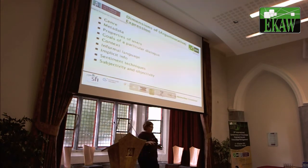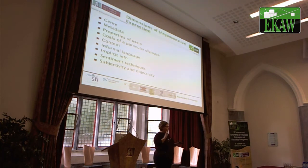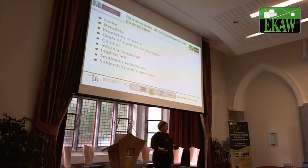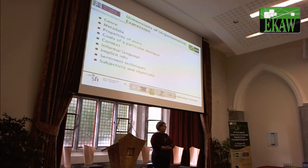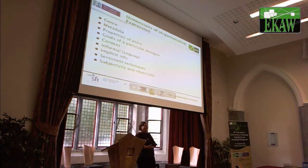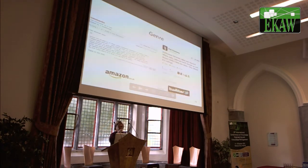The main point of this position paper is to give a list of what I'm calling dimensions of argumentative expression. If you're going to analyze argumentation in some automated or semi-automated way, the things you need to look at are: genre, metadata, properties of users, goals of a particular dialogue, the context, the language — which tends to be very informal — implicit information, since there's tons of that in any conversation, and of course sentiment, subjectivity, and objectivity, which people have done quite a lot with.